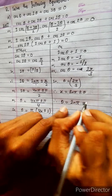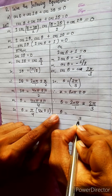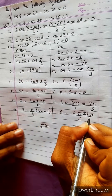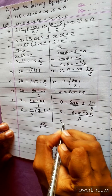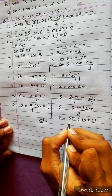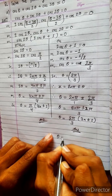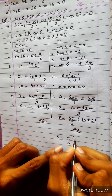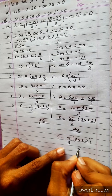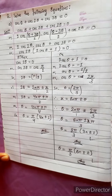So θ = 2nπ ± 2π/3. Taking LCM, this is (6nπ ± 2π)/3. We can take 2π common, giving 2π(3n ± 1)/3. This is also the correct answer as given in the book. Both answers are valid, and now we move to the next question.